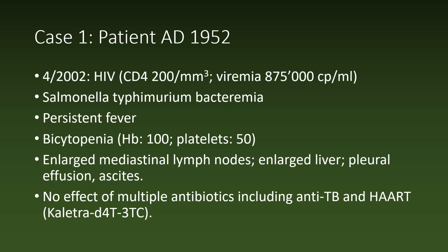Patient A.D. was 50 years old when he came to our attention because of a Salmonella typhimurium bacteremia. Despite treatment with appropriate antibiotics, fever persisted and anemia, thrombocytopenia, enlarged mediastinal lymph nodes, hepatomegaly, pleural effusion, and ascites developed. Highly active antiretroviral therapy, multiple antibiotics, and a trial of antituberculosis therapy had no good effect.